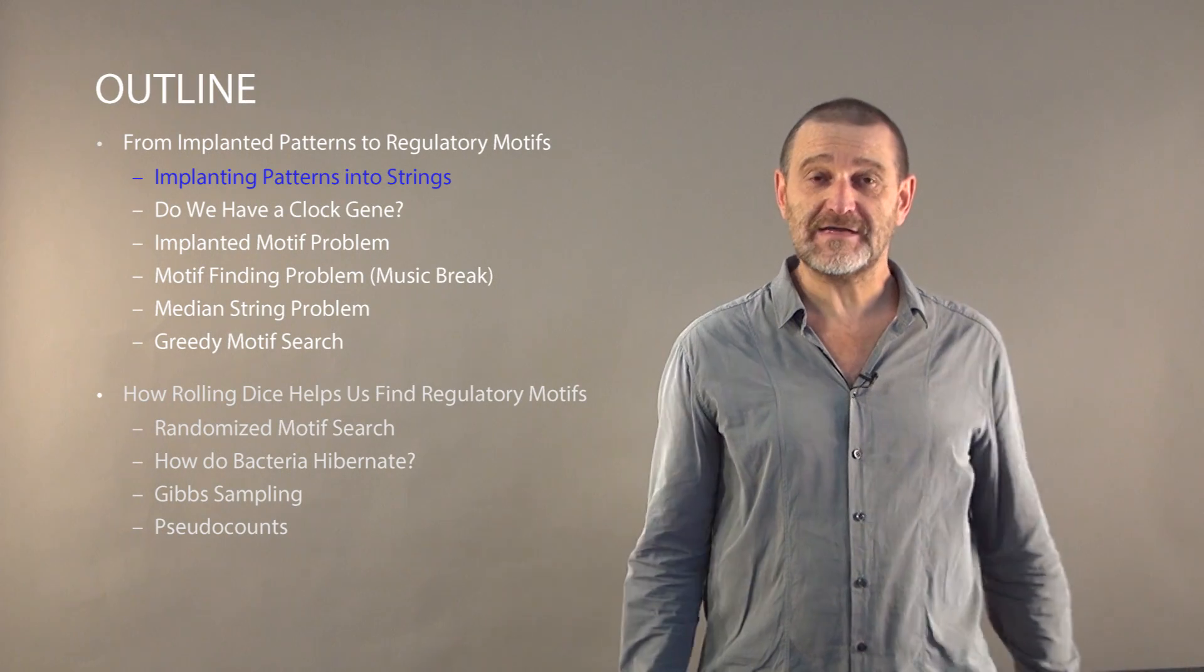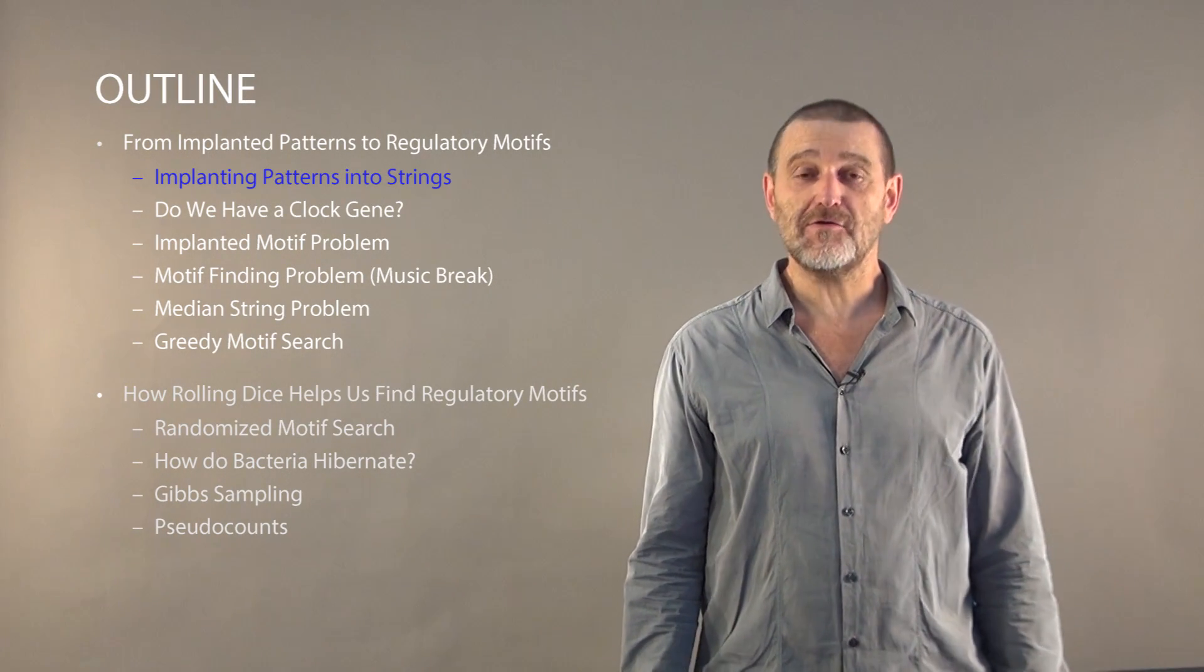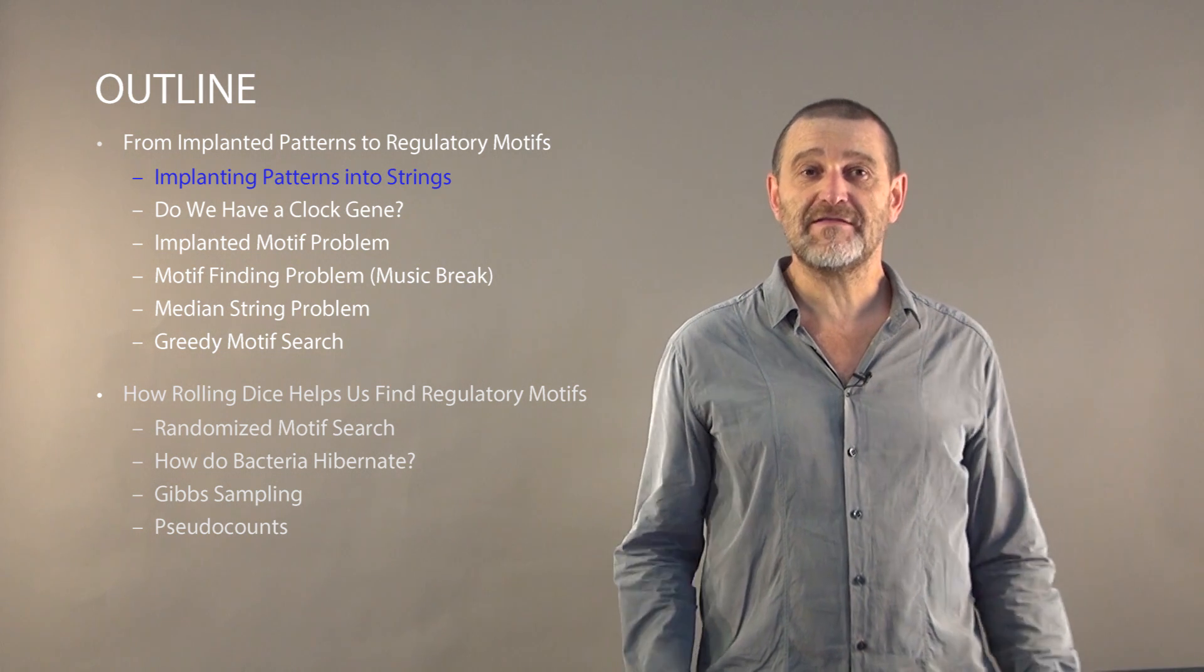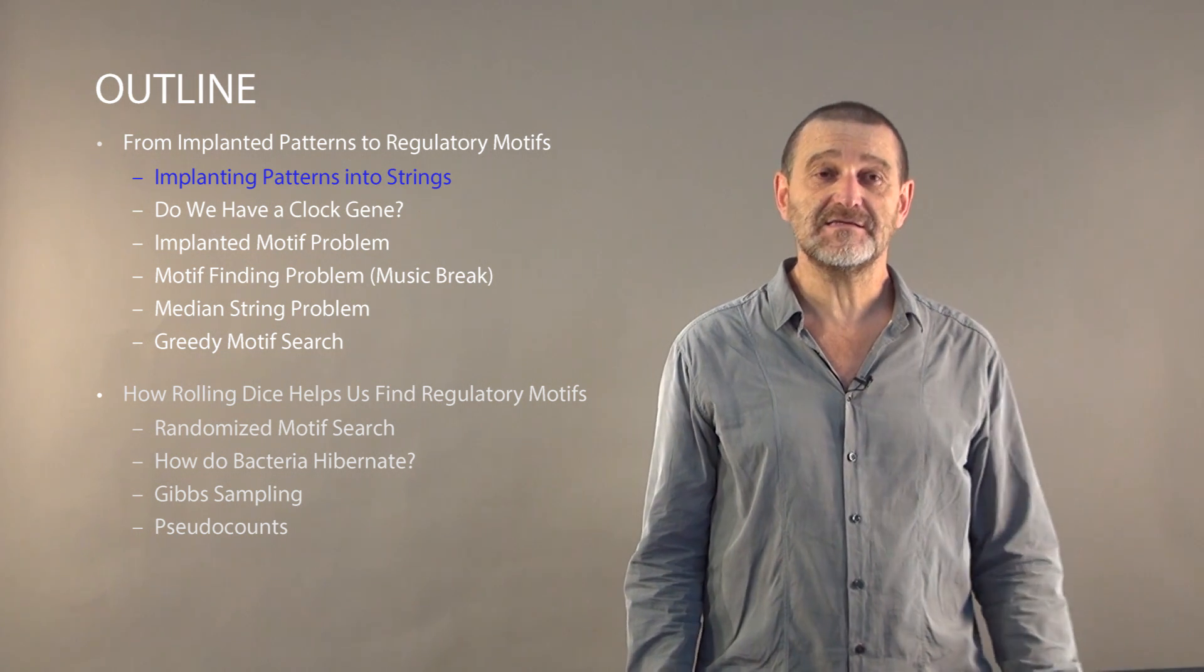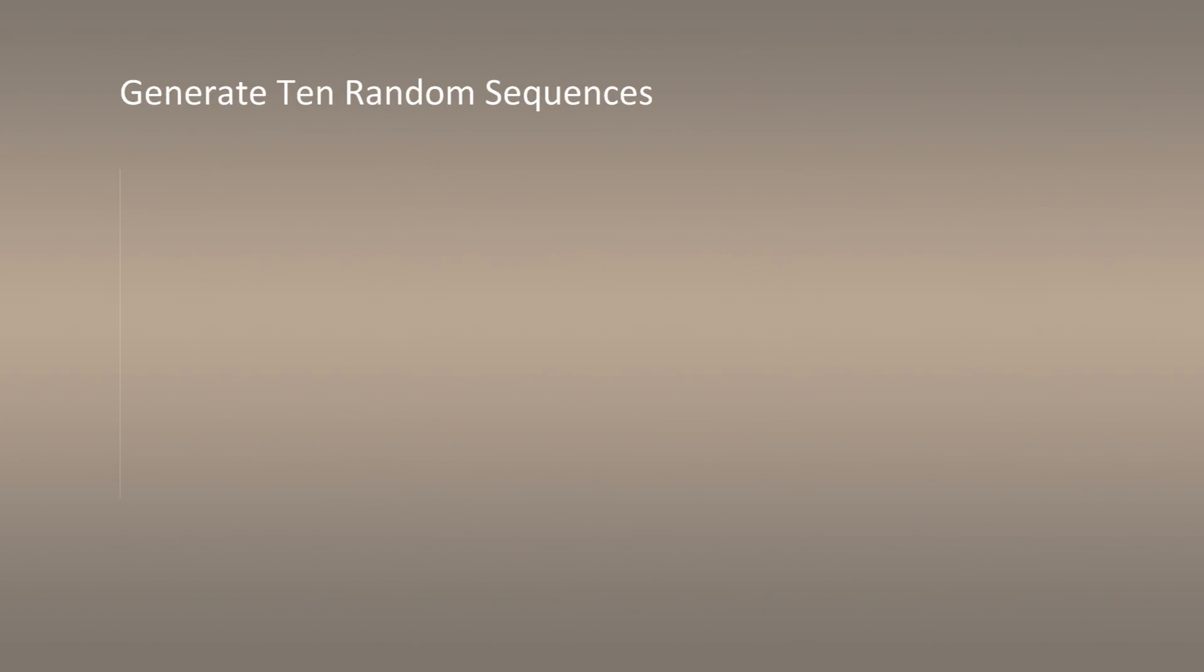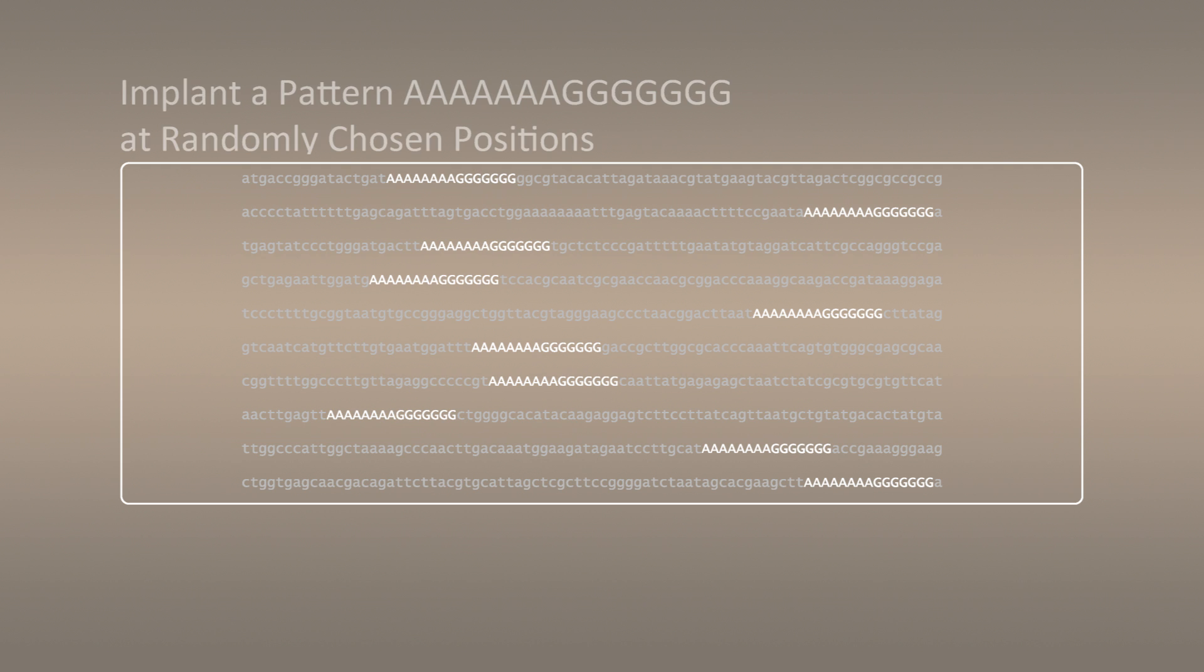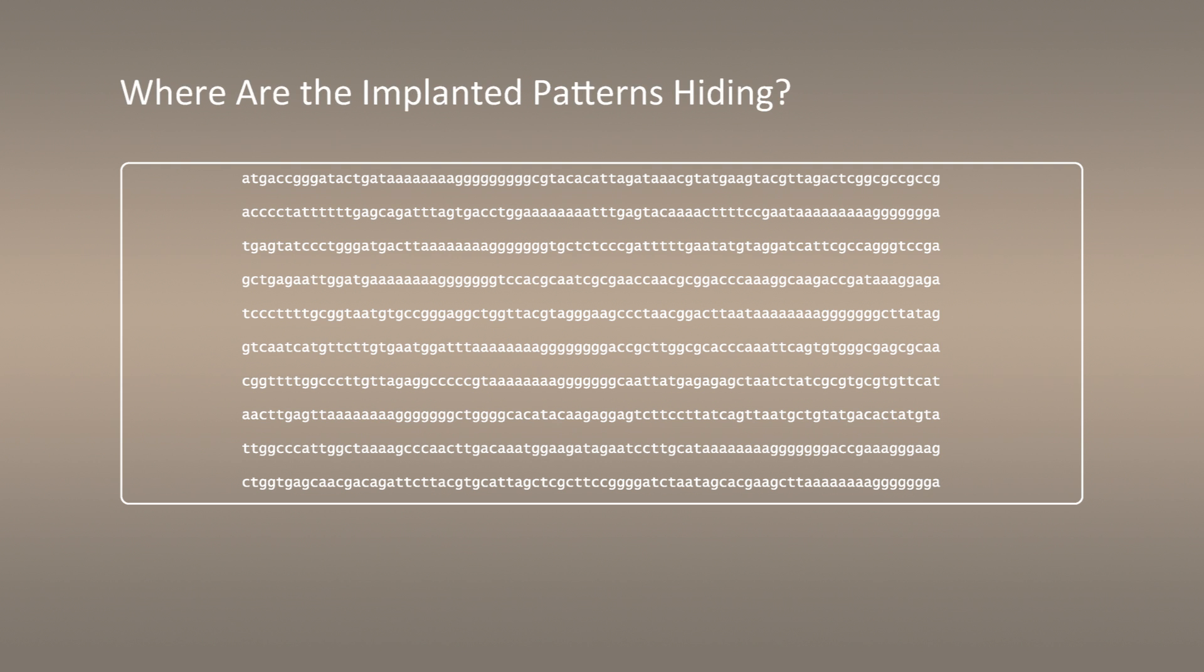Today we will talk about algorithms for finding regulatory motifs in DNA. We will start from a game when we will be implanting patterns in random strings. Let's generate 10 random sequences and then take a 15 nucleotide long pattern and insert it at random positions in these 10 sequences. Now turn your head, I will hide these patterns.